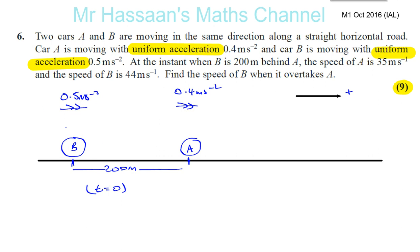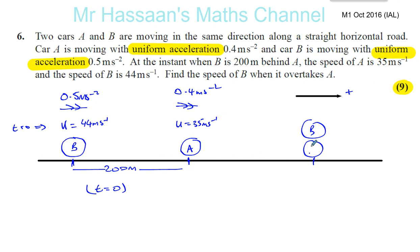At time equals zero, the initial speed of B is 44 meters per second, and the initial speed of A is 35 meters per second. A certain time and distance later, A and B will both be at the same position — B will be about to overtake A. Let's call that distance X, and the time at that point T. Time is common to both situations.